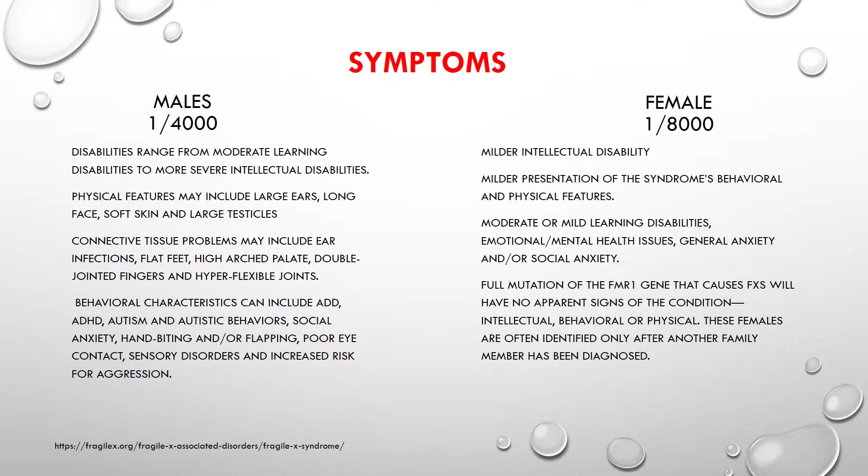Females typically have a milder form of intellectual disability and occur in one in every 8,000. There are also milder forms of behavioral and physical features. Females also experience mild to moderate learning disabilities, emotional and mental issues, and anxiety. A full mutation of the FMR1 gene will not have as obvious signs of Fragile X within females, and these females are often identified only by a fellow family member that has recently been diagnosed.